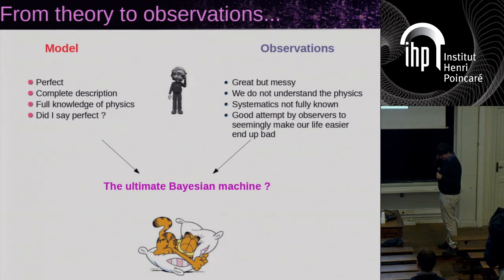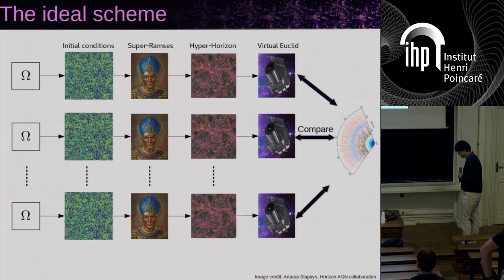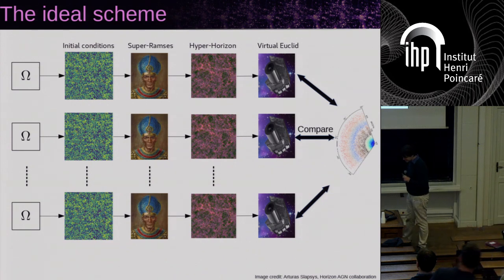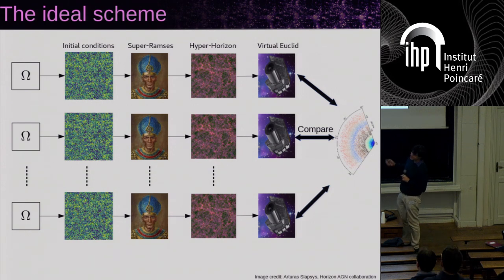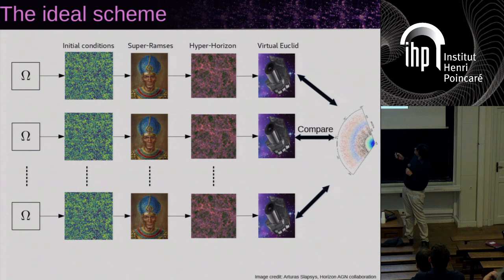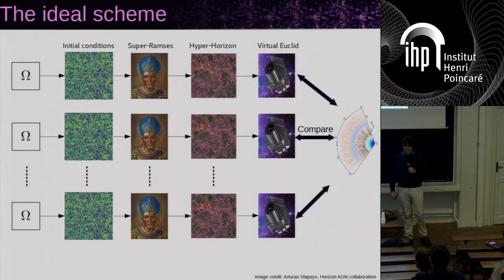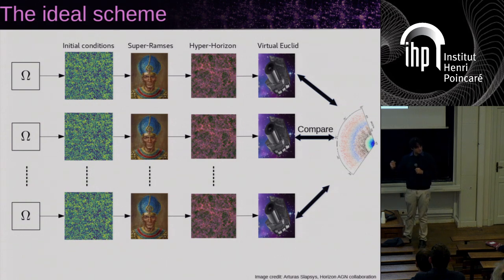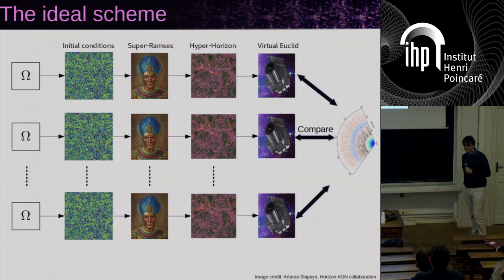That was the background. The ideal scheme would be the following: we have cosmology, we have a theory that produces initial conditions, and these initial conditions go to a great simulator — because we are in France, it's Ramses — a super Ramses that does everything. It generates a wonderful hyper horizon simulation with all the details down to nuclear physics and everything, maybe quarks, who knows. Then it's observed by a powerful virtual telescope in the machine, and you can compare this to observations. Of course, that's completely a dream and not possible, because otherwise we'd have a full universe in the computer.